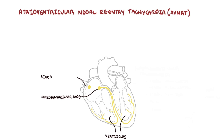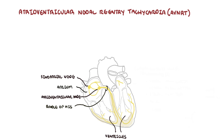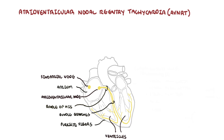The sinoatrial node is a dominant pacemaker cell in the heart which sends impulses to the atrium causing atrial contraction. From there the impulse arrives at the AV node, which conducts the impulse slower before entering the bundle of His, bundle branches, and Purkinje fibers.